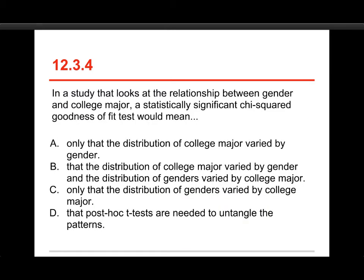Number four. In a study that looks at the relationship between gender and college major, a statistically significant chi-squared goodness-of-fit test would mean A, only that the distribution of college major varied by gender,